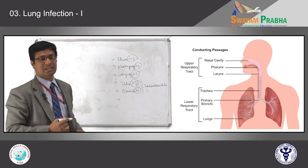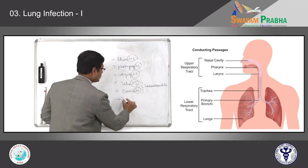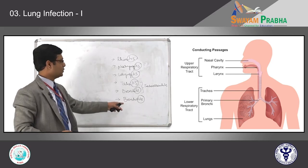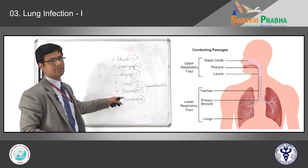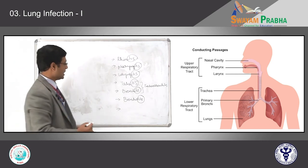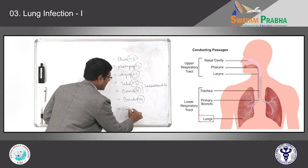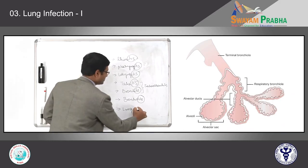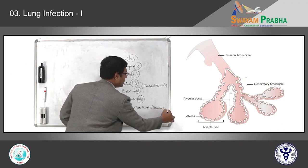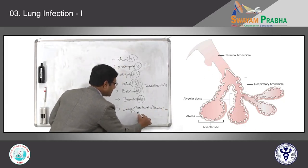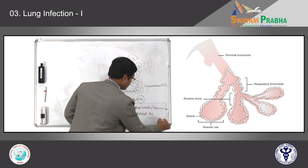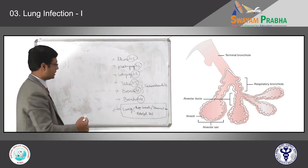If the inflammation is limited to the terminal bronchioles, we call it bronchiolitis. Again, '-itis' means inflammation — whichever part of the respiratory system is infected, we add '-itis'. Any kind of infection or inflammation present in the lung involving the respiratory bronchioles, terminal bronchioles, and the alveolar sac — in layman's terminology, we call it pneumonia.